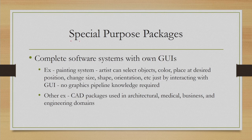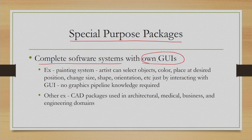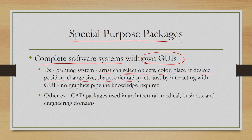In the special purpose packages, these are essentially complete software systems with their own GUIs or user interfaces. For example, a painting system has its own user interface through which an artist can select objects, select color, place objects at a desired position on the canvas or screen, change the size of the object, change the shape, change the orientation, and so on. The artist need not know anything about the graphics pipeline or how it is implemented. These are examples of complete software systems or packages.